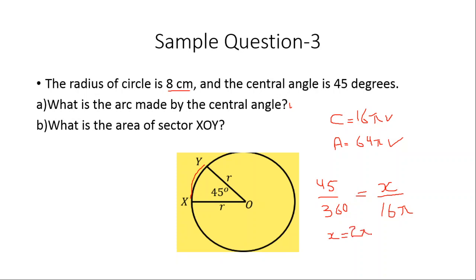Solving: 45 over 360 simplifies to 1/8, and then 16π moves to the other side, so x = 2π. The arc length is 2π. The first part is done — I can write 2π here.